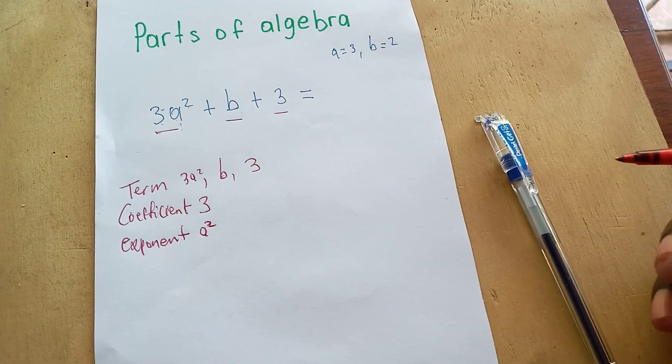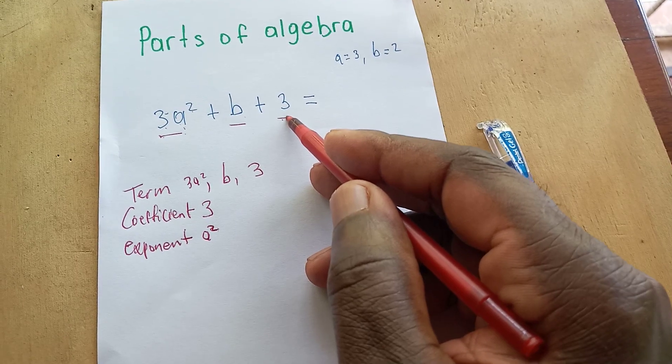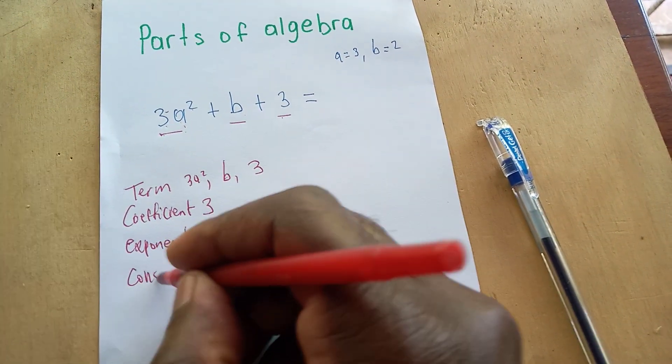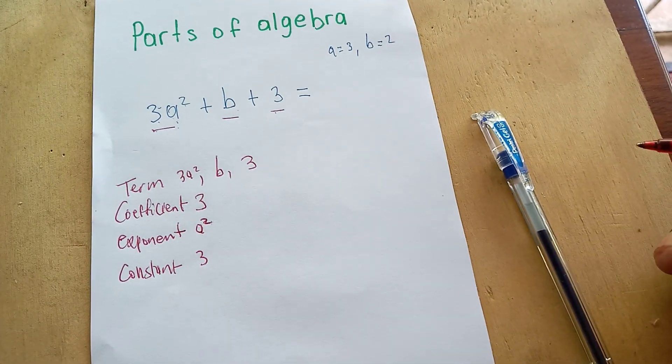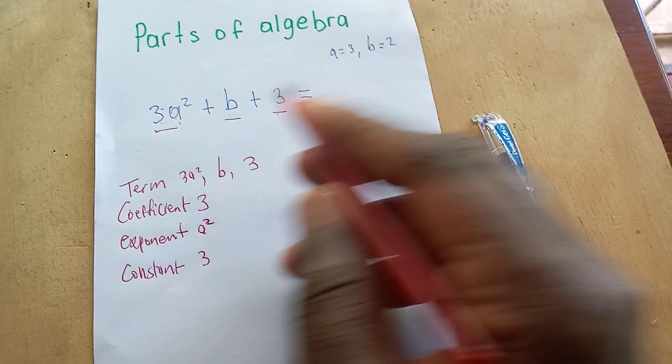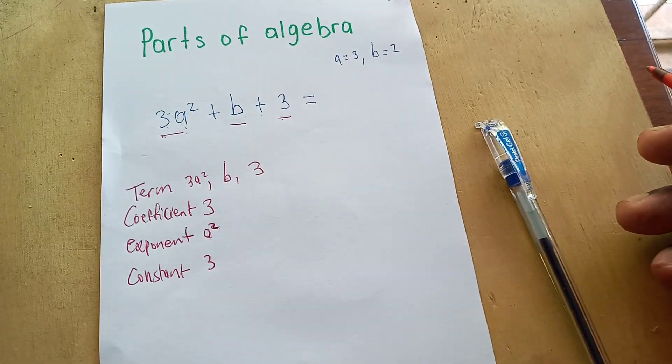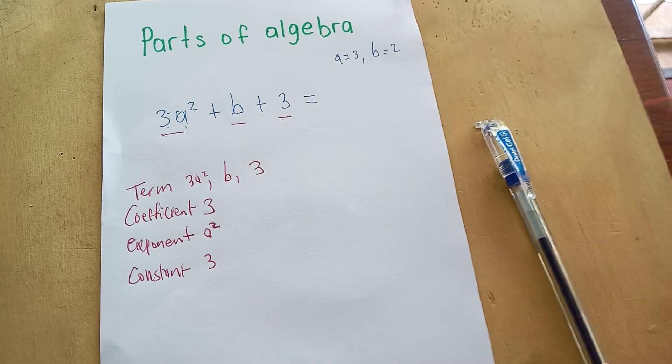Then we have the constant - this by itself with no variable at all is the constant, which would be equal to 3. Those are the basic parts of algebra. And then we have the operations, which is the subtraction and addition sign, four operations.